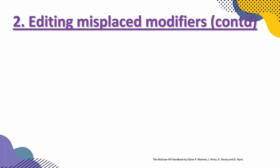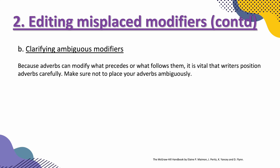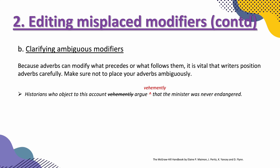Continuing with editing misplaced modifiers, the next category is clarifying ambiguous modifiers. Because adverbs can modify what precedes or what follows them, it is vital that writers position adverbs carefully. For example: 'Historians who object to this account vehemently argue that the minister was never endangered.' It is much better to place the adverb right after the verb 'argue,' because it is modifying the minister — the noun of the next clause. So we would write: 'Historians who object to this account argue vehemently that the minister was never endangered.'